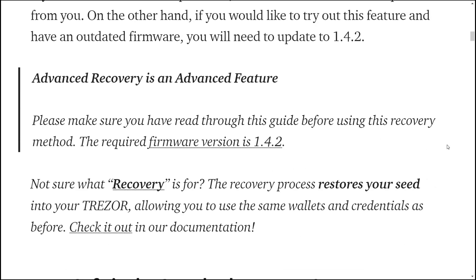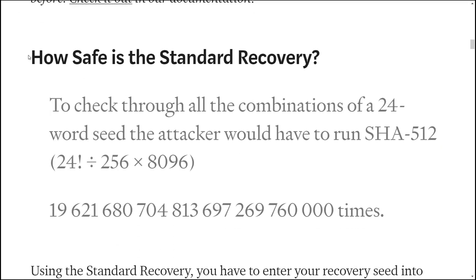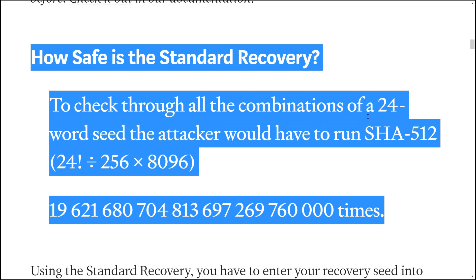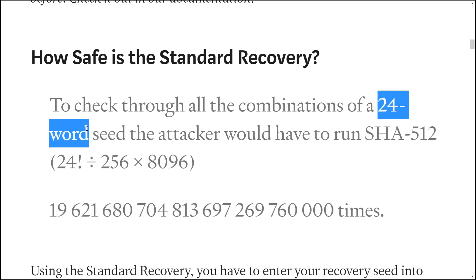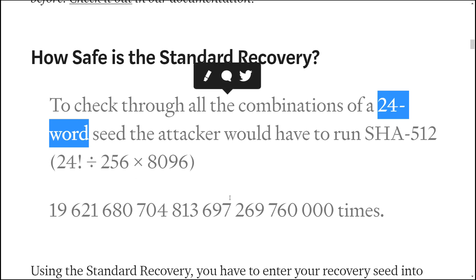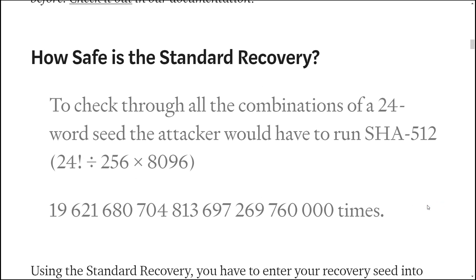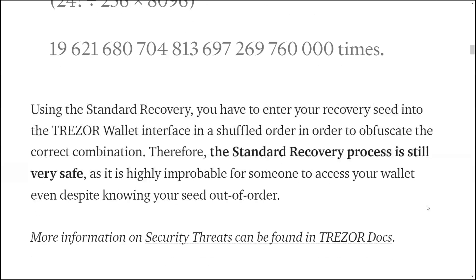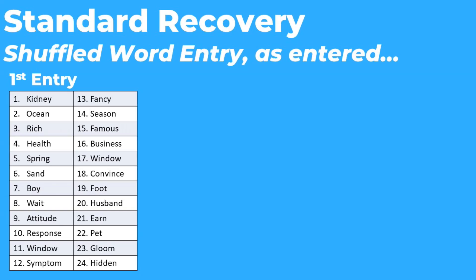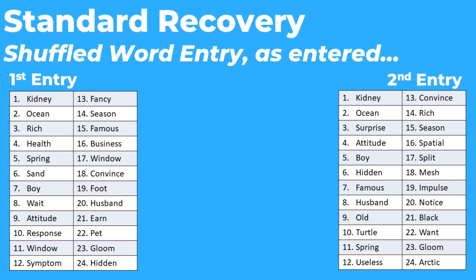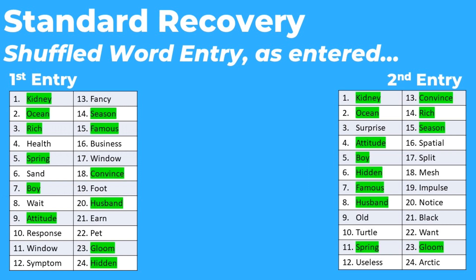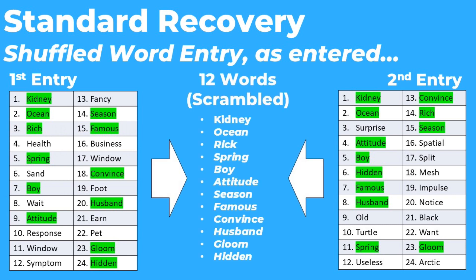The standard recovery process for Trezor is very fast and actually quite secure. The one thing you really need to be aware of though is if you only have a 12-word seed, not a 24-word seed — every time you enter it, it not only scrambles the words but injects extra random words so it looks like a full 24-word seed. If you have a 12-word seed and do a standard or dry run recovery as few as two times on the same compromised computer, someone could work out what your 12 words were and de-scramble them.